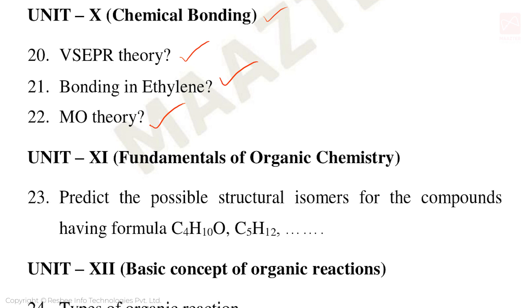Unit 11: Fundamentals of Organic Chemistry — for a given compound, draw possible structural isomers. For C5H12, draw all possible structural isomers. This is an important 5 mark question.